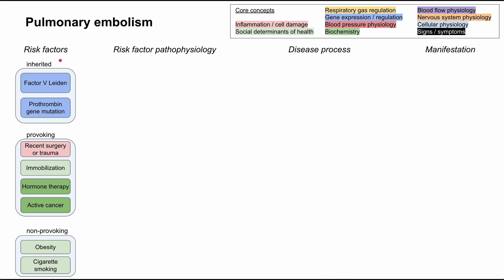The risk factors can be grouped into three categories. The first is inherited disorders — genetic disorders including Factor V Leiden and prothrombin gene mutation. If the risk factor isn't inherited, it's acquired, and these can be further broken down into provoking and non-provoking acquired risk factors. Examples of provoking risk factors are recent surgery or trauma, immobilization, new hormone therapy, and active cancer. Some non-provoking or passive risk factors are obesity and cigarette smoking.